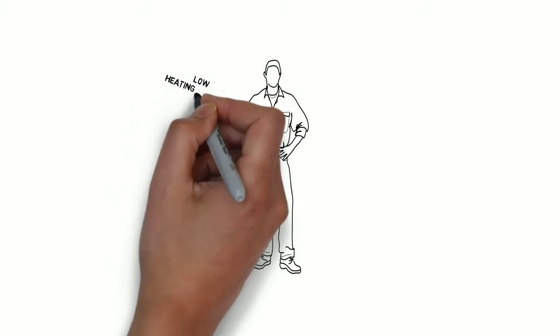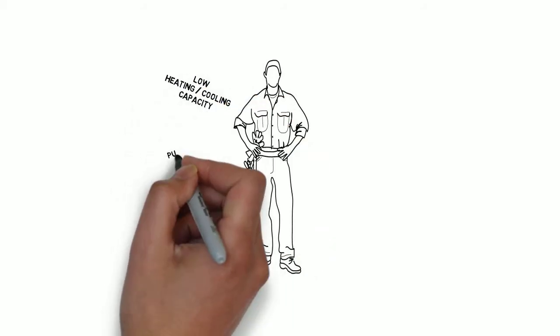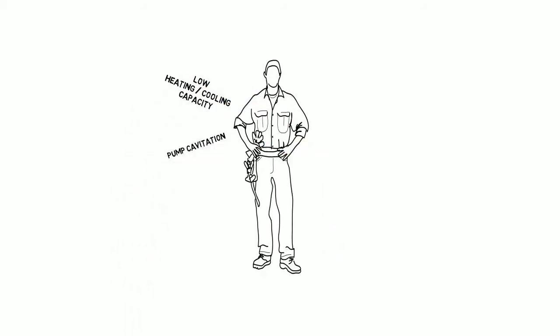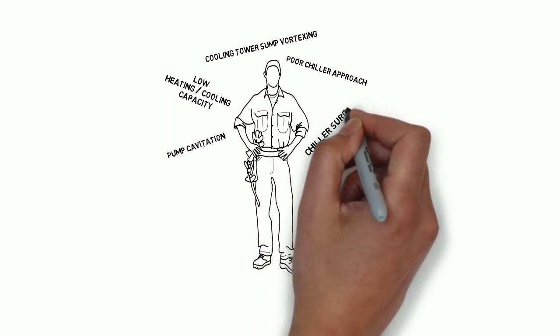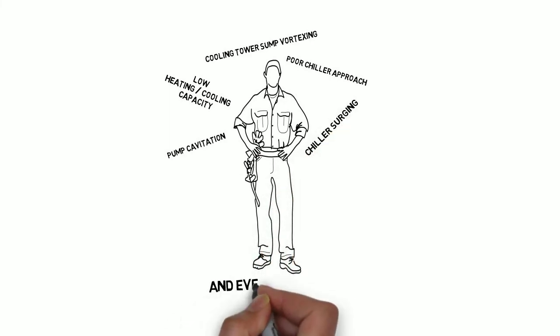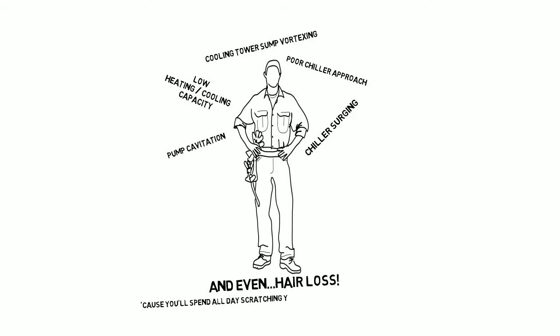Who cares about water flow? You do. I do. Everybody does. Why? Incorrect water flow can cause heating and cooling capacity issues, pump cavitation, poor chiller approach, cooling tower sump vortexing, chiller surging for centrifugals, and even hair loss. How can it cause hair loss? Simple — because if you can't calculate water flow, you can't diagnose any of these problems and you're going to spend all day scratching your head.